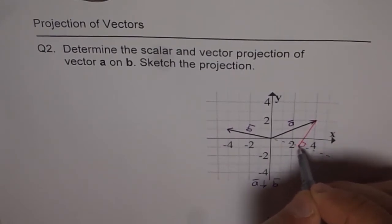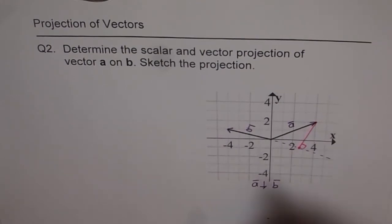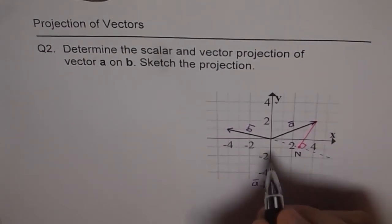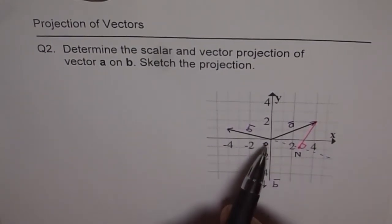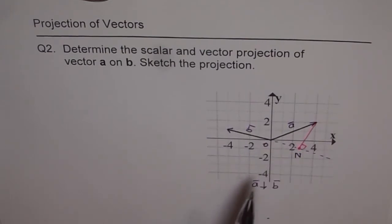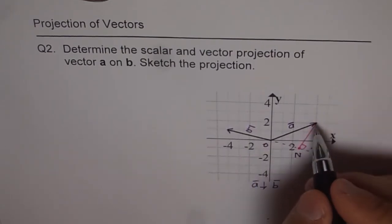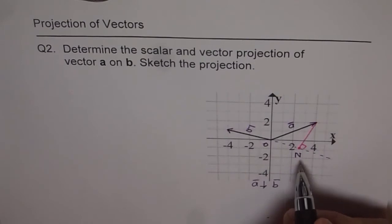Let us say this. So this point on the line, let me call it N from O. So ON is my projection of A on B.